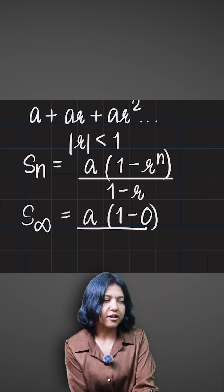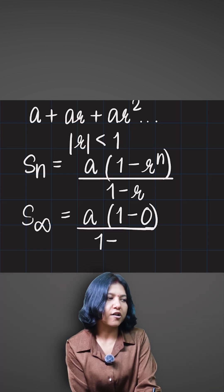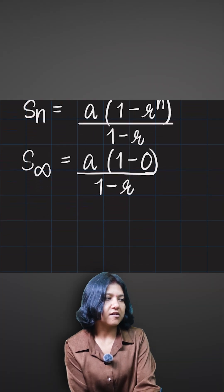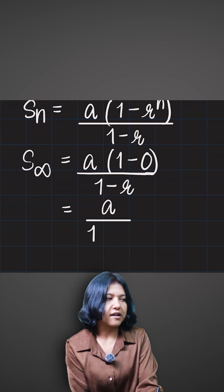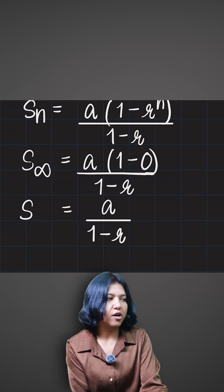When you plug in the power of infinity, the term simply becomes zero, giving you the formula. So simple for sum of infinite terms, which is simply equal to—one minus zero is one—so a upon one minus r. This is how you find the sum of infinite terms.